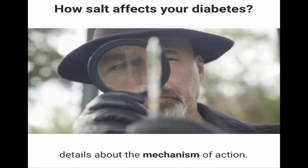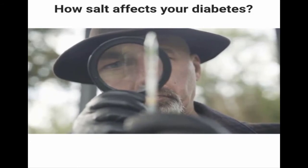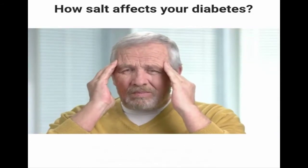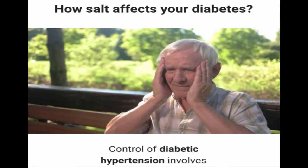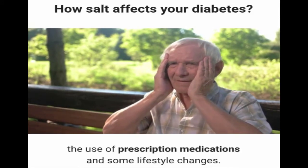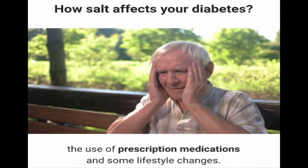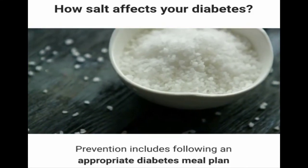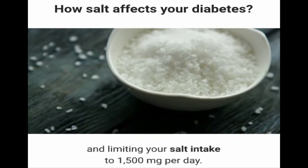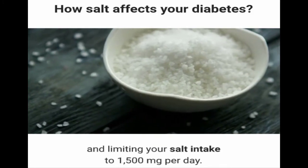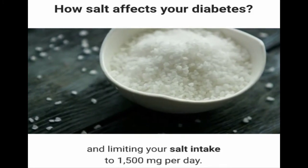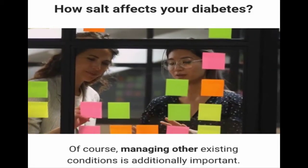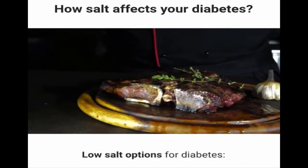Researchers are still investigating the mechanism of action, control, and prevention of hypertension in diabetes. Control of diabetic hypertension involves prescription medications and lifestyle changes. Prevention includes following an appropriate diabetes meal plan and limiting your salt intake to 1500 milligrams per day. Managing other existing conditions is additionally important.